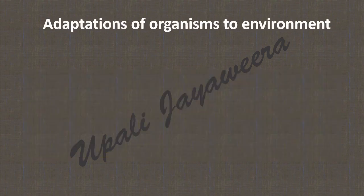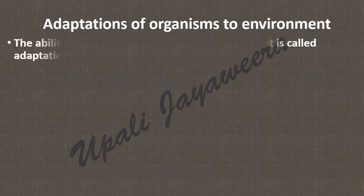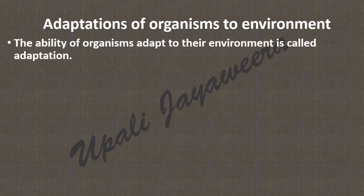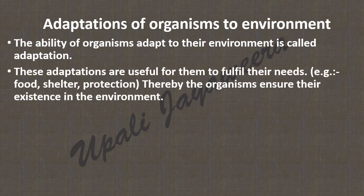Now we will find out about adaptations of organisms to their environment. The ability of organisms to adapt to their environment is called adaptation. These adaptations are useful for them to fulfill their needs — for example, food, shelter, and protection — and thereby organisms ensure their existence in the environment.